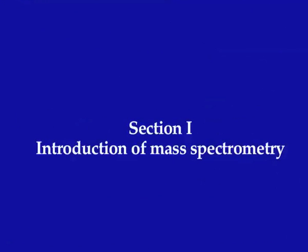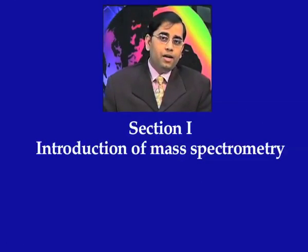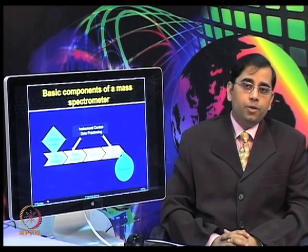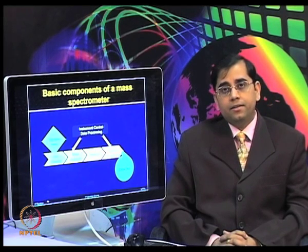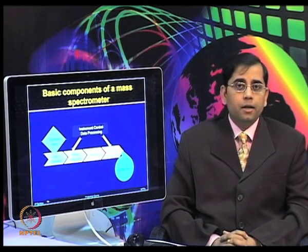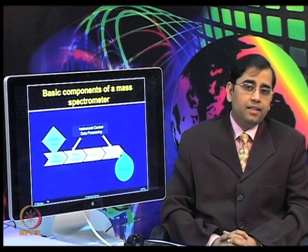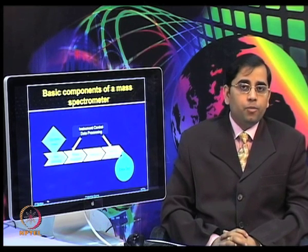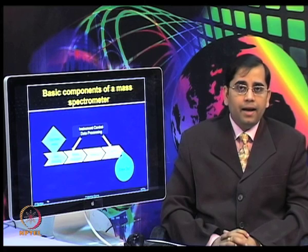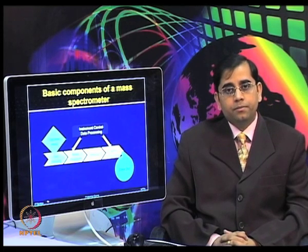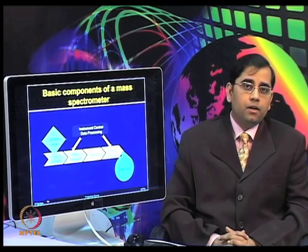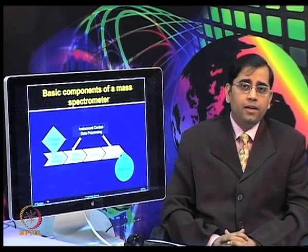Now let us talk about the different parts of the mass spectrometer. The major components include the sample inlet, ion source, mass analyzer, detector, signal processing components, and data output. Let us look at each of these components in a little more detail.